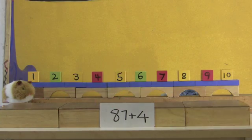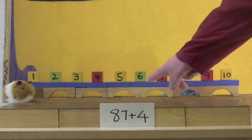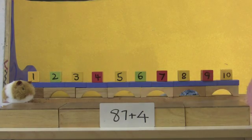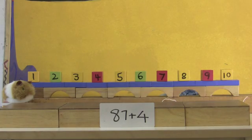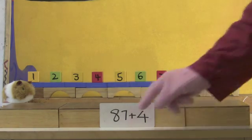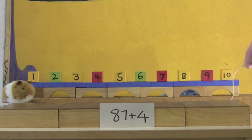To do 87 plus four, I'm back on my units number line. I'm not counting in tens anymore, because I'm just adding four units. 87 in my head, and move to four.